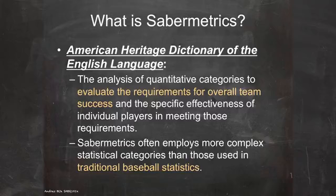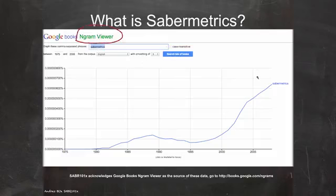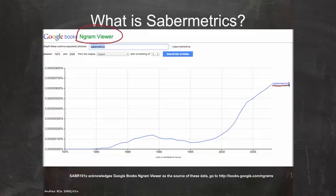Each of these definitions is slightly different — not exactly what we might think of as the encompassing definition of sabermetrics today. I want to show something interesting: Google has a tool under Google Books called the Ngram Viewer. I've put the word 'sabermetrics' into it. The Ngram Viewer measures word usage — how 'sabermetrics' has been used in books scanned by the Google Books project. From 1975 to 2008, we can see the pattern of usage, and there is a clear increasing trend.